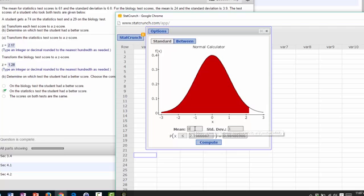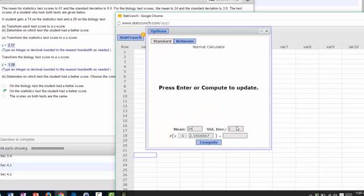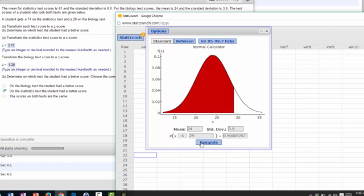And we just go back again. The biology test mean was 24, the standard deviation 3.9, the score that the student got was 29. And we click on compute. We get our sketch again showing that this score of 29 is on the right side of the mean, which means it's a good score, and it's a 90th percentile score. 90 percent of the students made lower scores than our student.